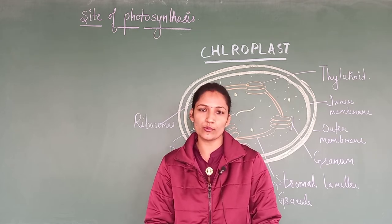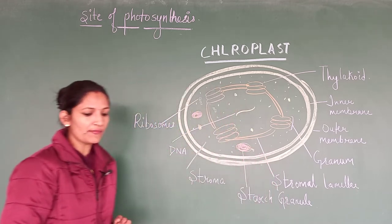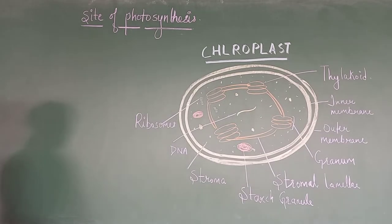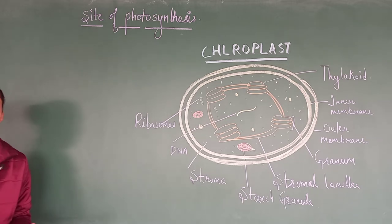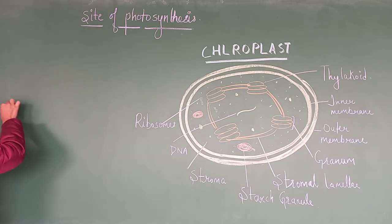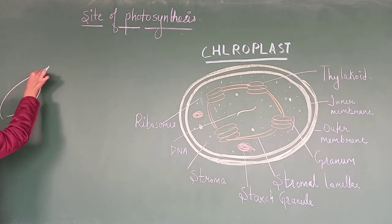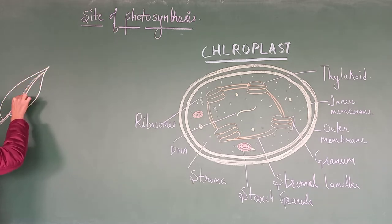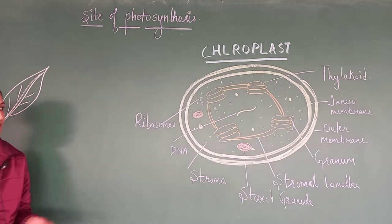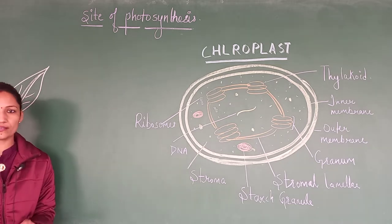So, before coming directly to chloroplast, we will understand which type of cells are involved. As we have discussed, leaves are the green part of the plant which contain chlorophyll pigment, and that chlorophyll is present specifically in chloroplast.